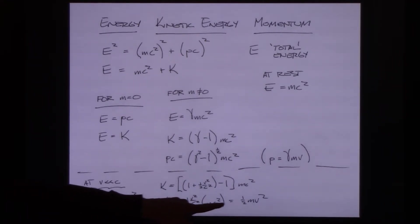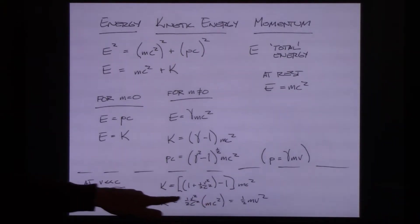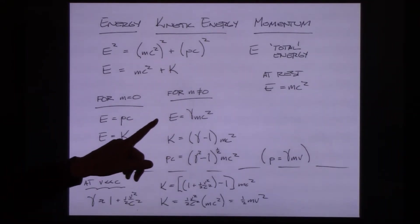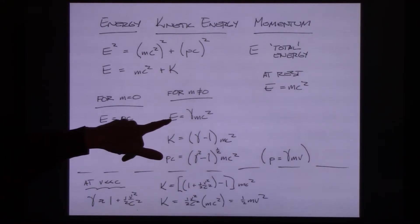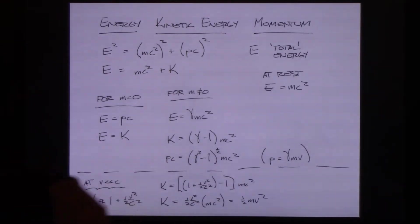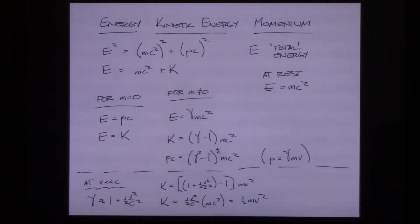The conserved quantities in special relativity are total energy E and relativistic momentum p. Those are the new rules. Let's practice using these formulas with some examples.